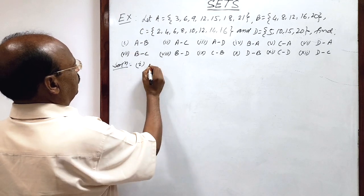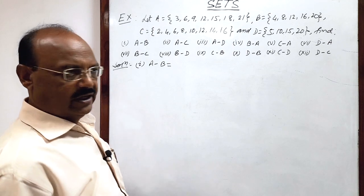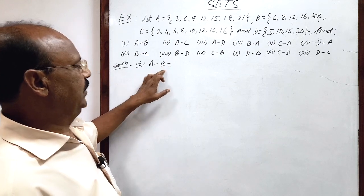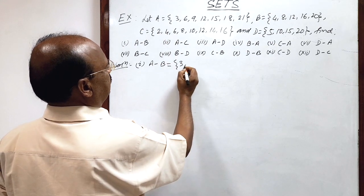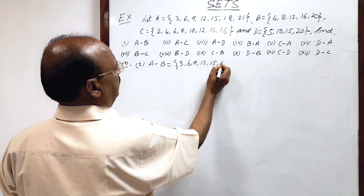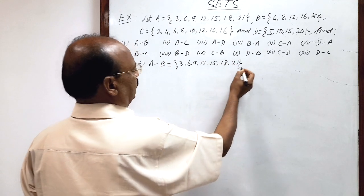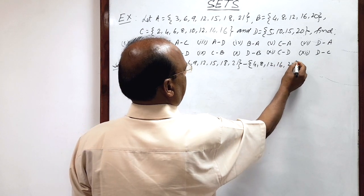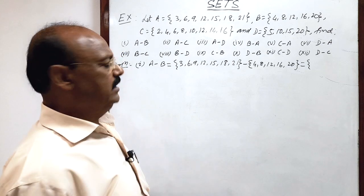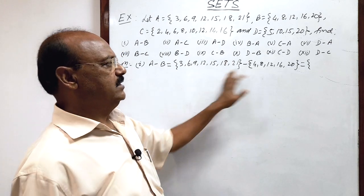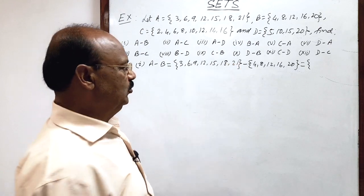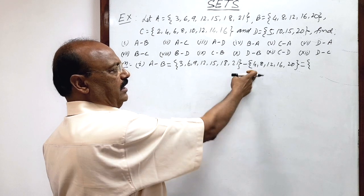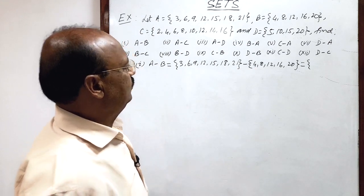The first question is we have to find A minus B. It is always convenient to write both sets completely. Set A is having elements 3, 6, 9, 12, 15, 18, and 21, minus set B having elements 4, 8, 12, 16, and 20. We can get the answer very easily by removing the common elements in both sets from set A. Let us check which elements are common here.